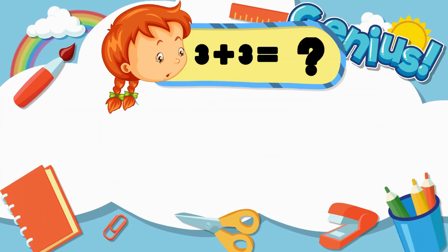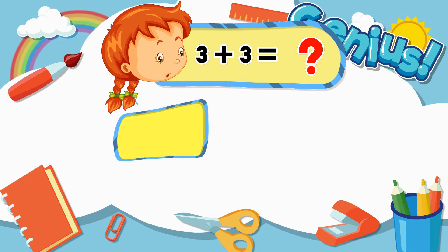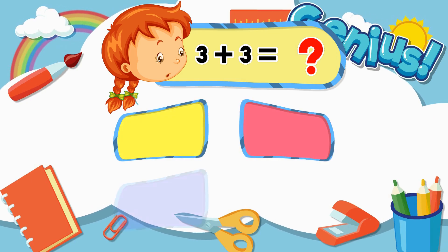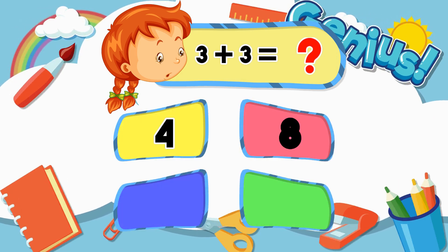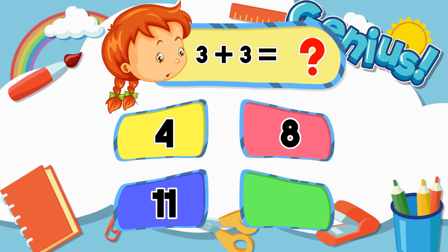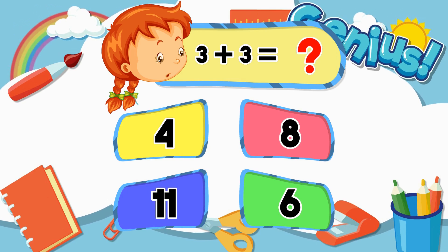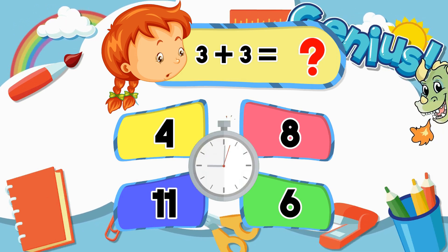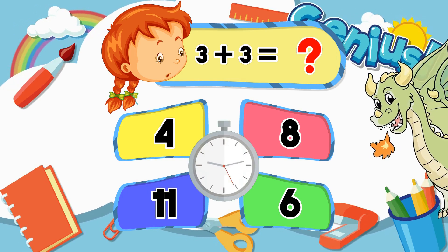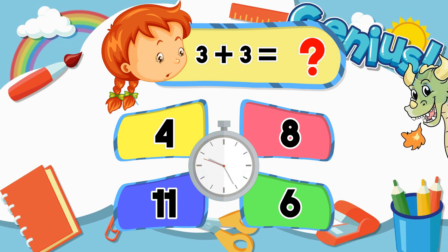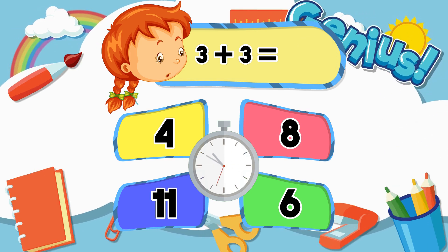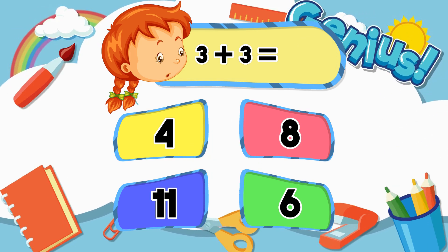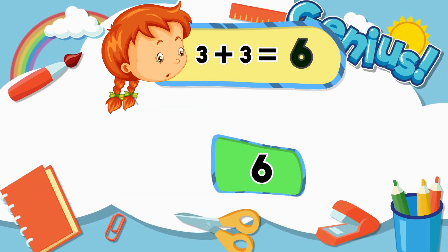What is three plus three? Options: Four, Eight, Eleven, Six. Answer: Six.